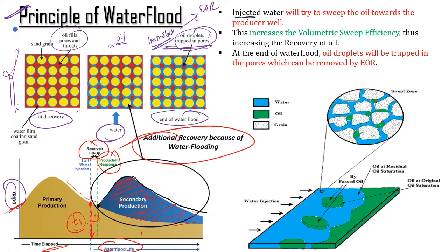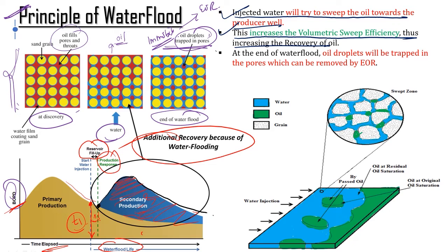Injected water tries to sweep oil toward the producer well, increasing volumetric sweep efficiency and thus increasing oil recovery. Volumetric sweep efficiency is the product of aerial sweep efficiency and vertical sweep efficiency. At the end of water flood, oil droplets remain trapped in the pores and can be removed by EOR only.